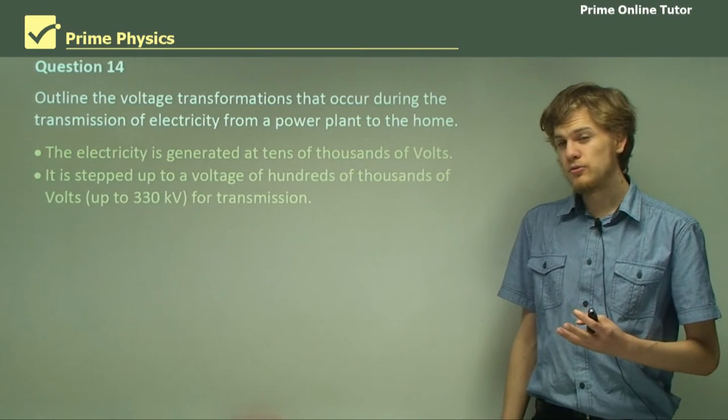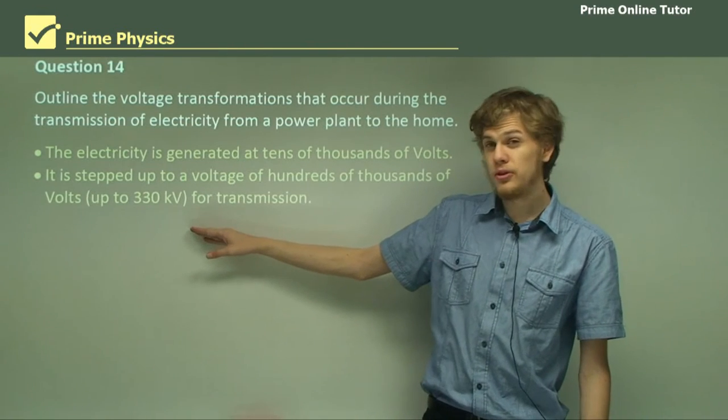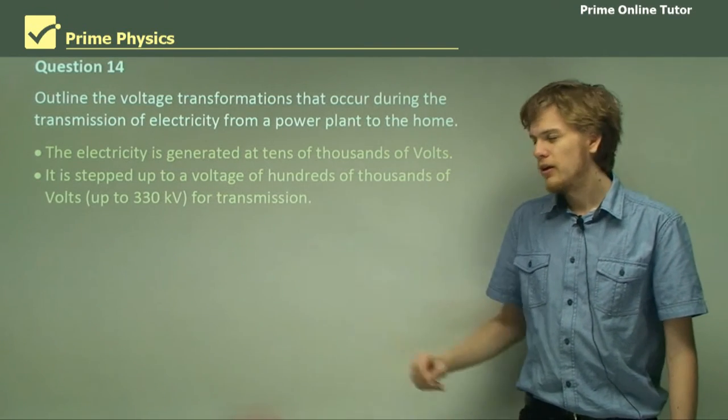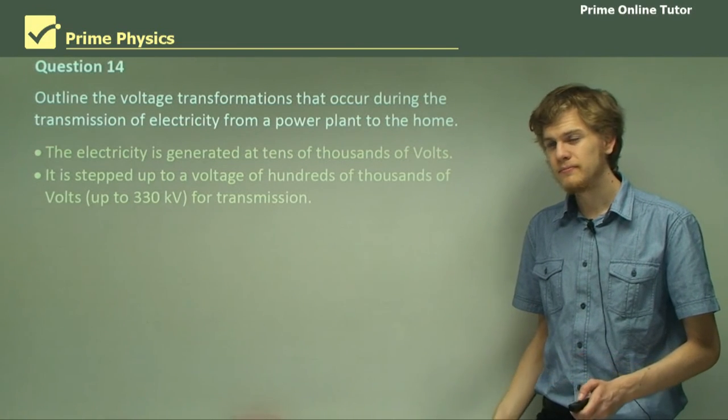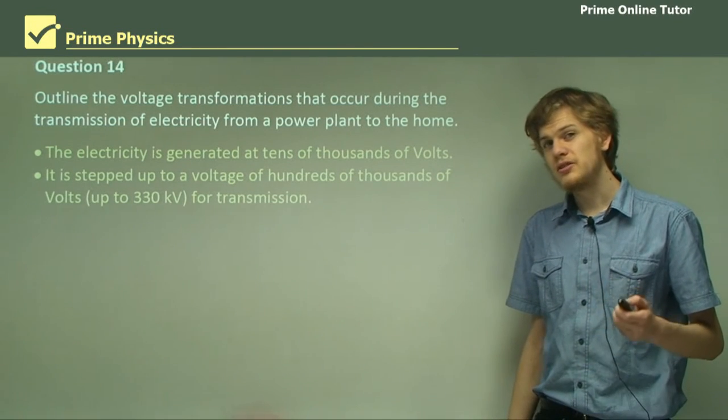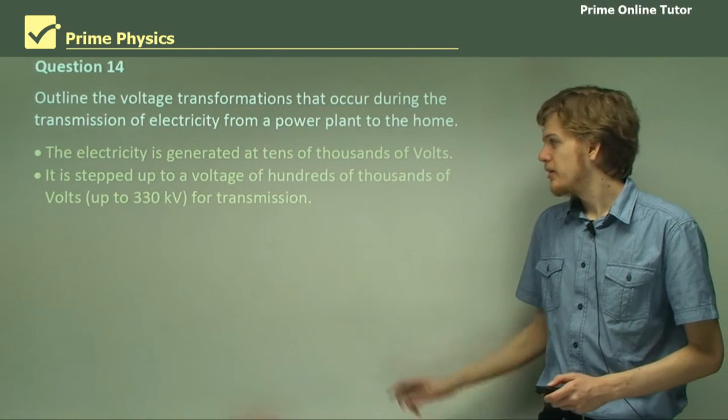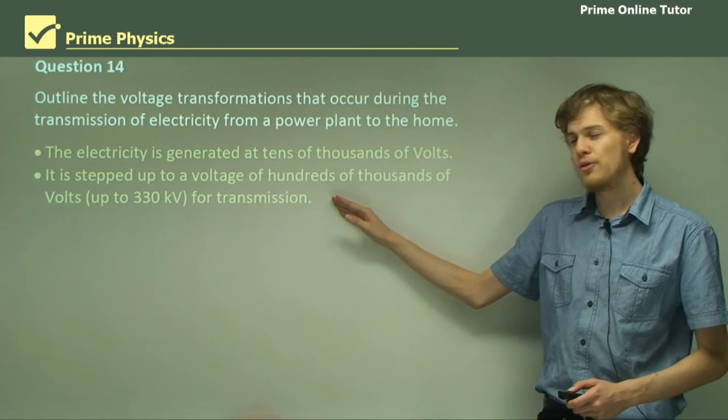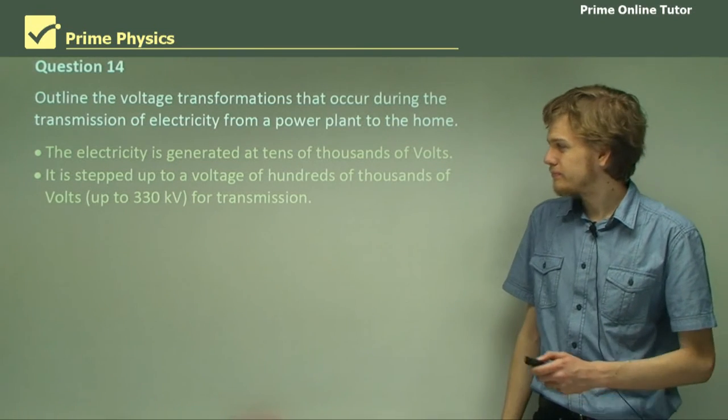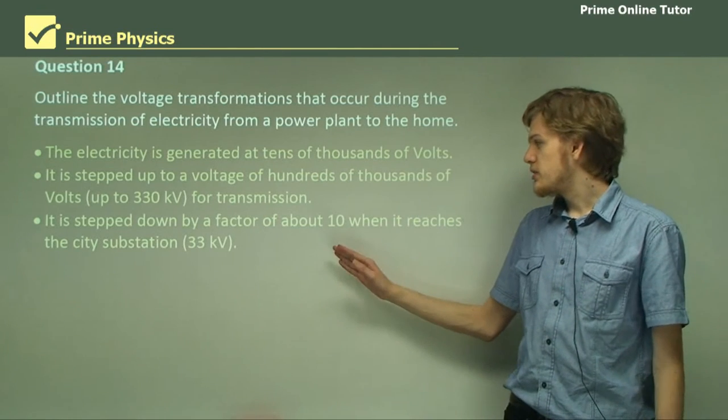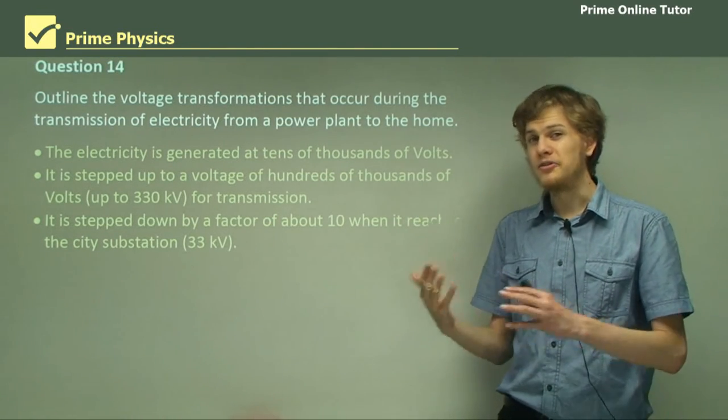It's stepped up to a voltage of hundreds of thousands of volts, up to about 330 kilovolts in Australia, for transmission over very long distances. Eventually it reaches a city. And this is when it's stepped down. The 330 kilovolts is the highest voltage that the electricity reaches. So once it reaches the city substation, it's stepped down by a factor of about 10, to a voltage of perhaps 33 kilovolts.